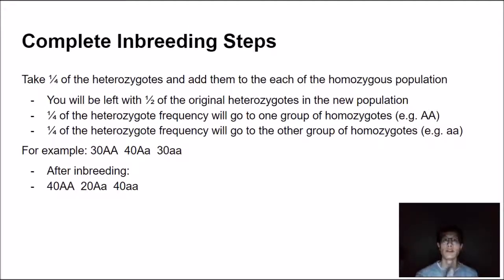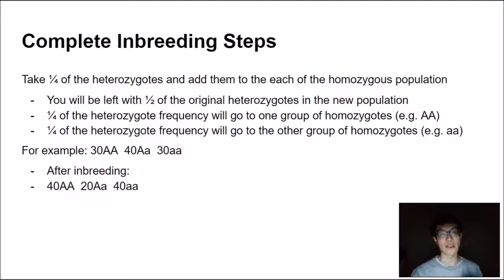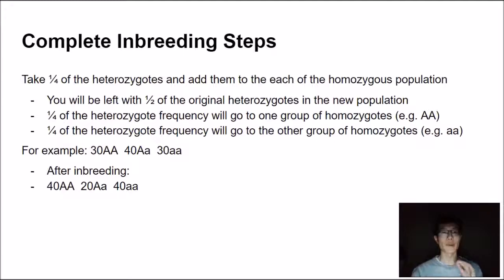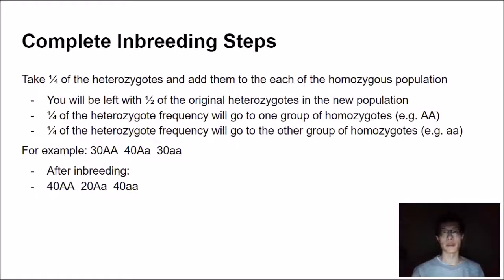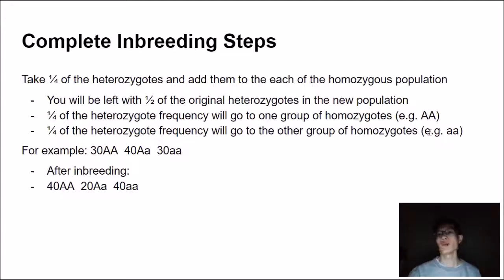So how do you solve a problem that asks what happens if a population goes through complete inbreeding? The first step is to take one-fourth of the heterozygotes and add them to each of the homozygous populations. You'll be left with one-half of the original heterozygotes in the new population. One-fourth of the heterozygote frequency goes to the homozygous dominant group (AA), and another one-fourth goes to the homozygous recessive group (aa).